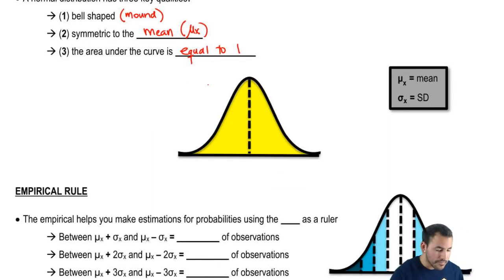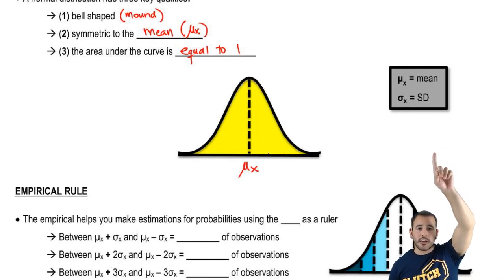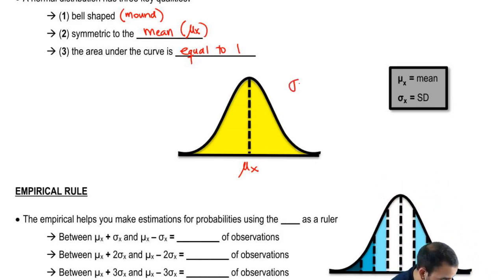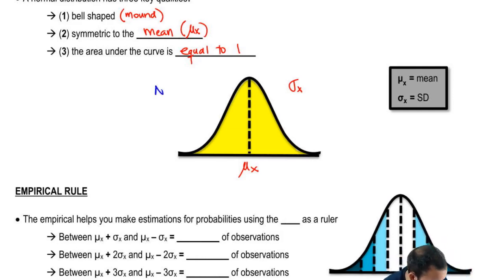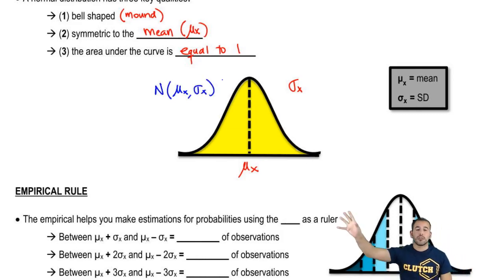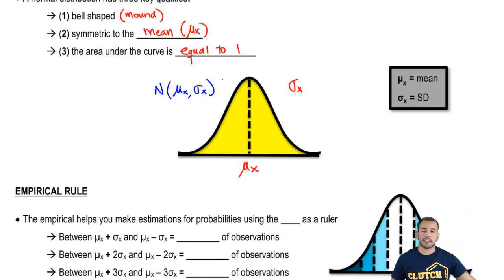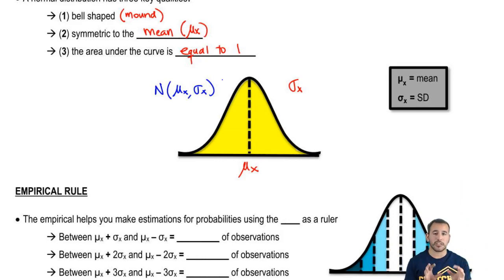In the middle of the distribution we have our mean. Mu-x is the mean of any random variable x, and sigma-x is the standard deviation of that variable. Any normal distribution can be represented by its mean and standard deviation — just like a first and last name. I write the mean as the midpoint and the standard deviation along the right side of the distribution.